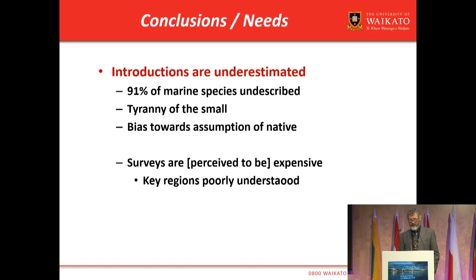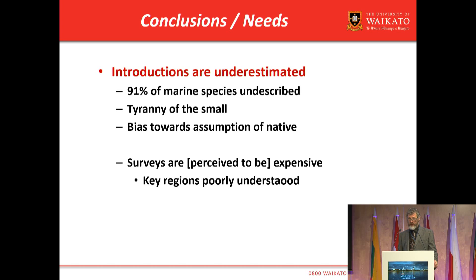The desire for us to do something is likely to lead to assisted colonization activity where we will pick up entire reef systems and move them to novel locations. These novel combinations of species and their interactions in new environments are critically going to be ostensibly biological introductions, and our understanding of how invaders interact with new communities is going to help us understand and plan for these assisted colonization events. Our conclusions, and more importantly our needs: we know that introductions are underestimated worldwide. We currently know that 91% of species in the marine environment are undescribed, and our ability to determine native versus non-native status is reliant on that understanding. There is a tyranny of the small — small things we once thought had no biogeography, but now we know they do; and there's a bias among existing taxonomists and biogeographers of an assumption towards natives. Surveys are critical to our ability to manage these locations.